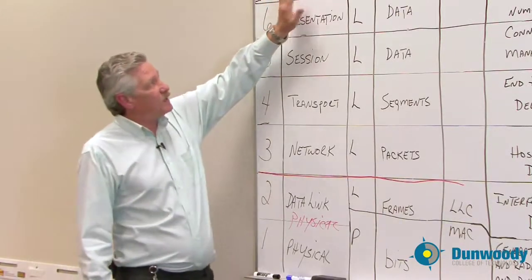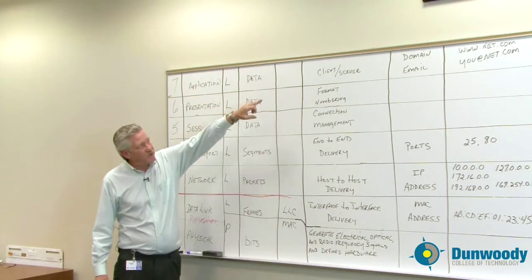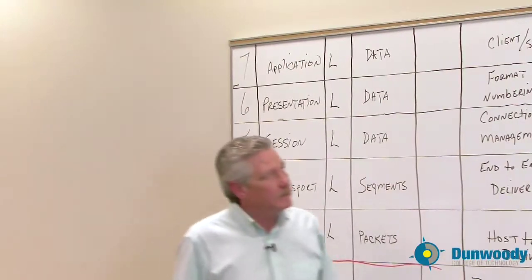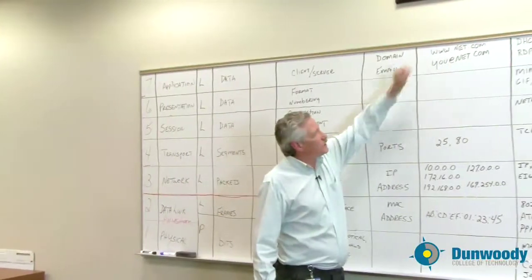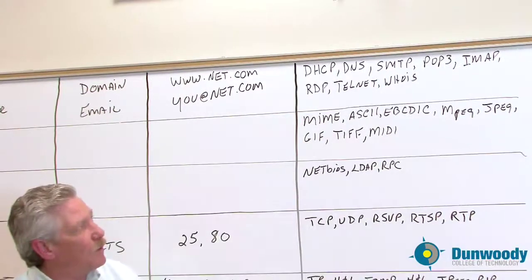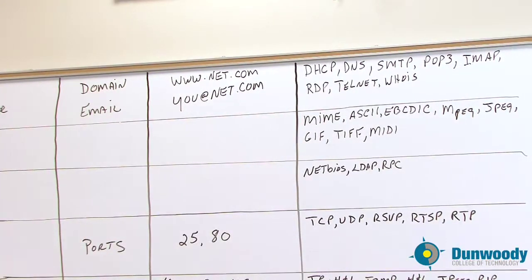The last layer was the application layer. It's the client server. This is the one that deals with domains and emails. And the addresses are such as www.net.com and u.net.com. And some of the protocols like DNS, DHCP.